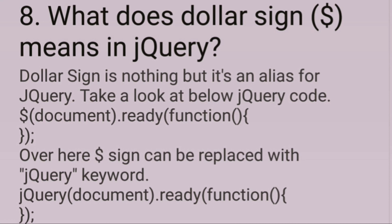What does $ mean in jQuery? $ is nothing but an alias for jQuery. Take a look at the below jQuery code: $(document).ready(function). Here $ can be replaced with the jQuery keyword: jQuery(document).ready(function).